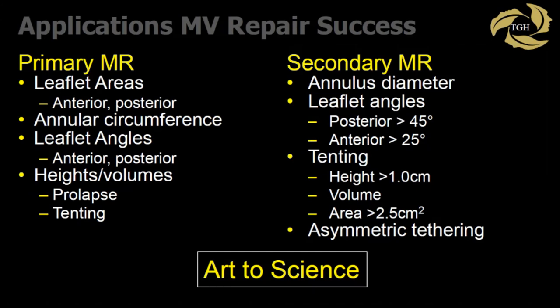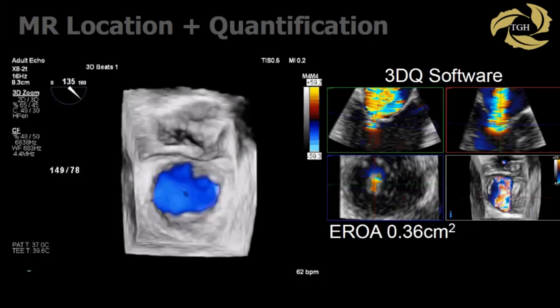It helps predict valve repair success — in terms of looking at quantitative factors like leaflet areas, annular circumference, angles, height, and volumes. This is going to penetrate the literature and clinical practice more as surgeons look at this and say, I work at a reference center — this is what I need to know. Same thing with secondary MR — more importantly, it will predict failure, identifying the cases you shouldn't repair. We're trying to create not just the art of mitral valve repair, but the science of mitral valve repair. Your surgeons may start asking for these numbers as a guidepost.